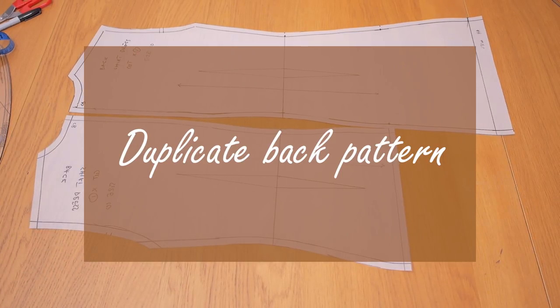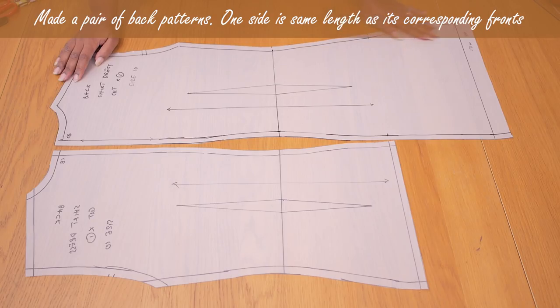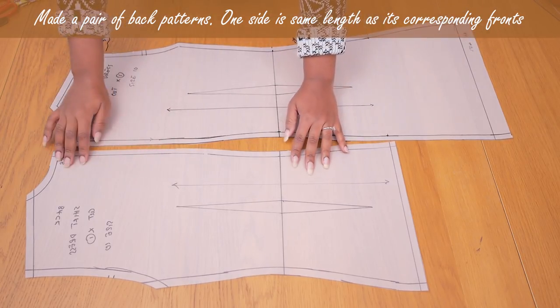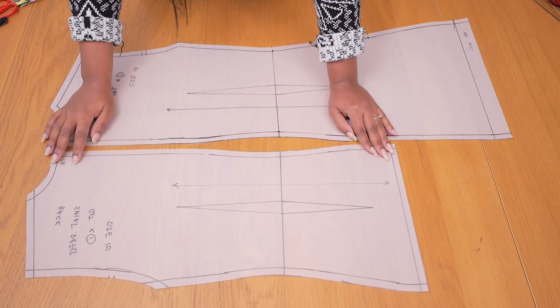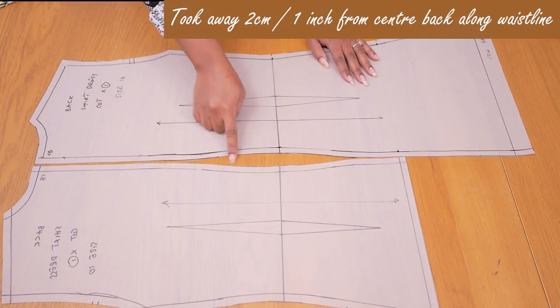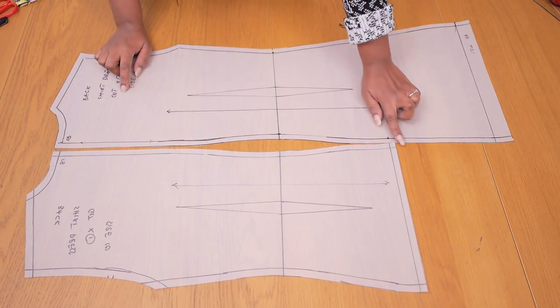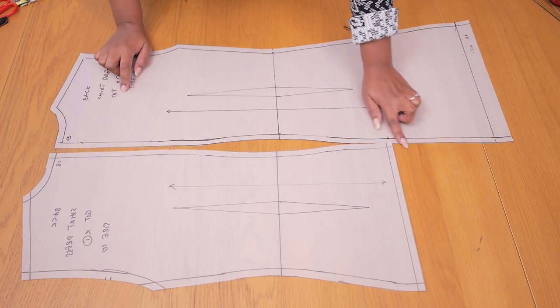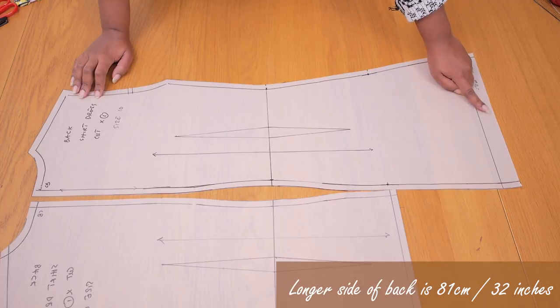Now moving on to my back patterns, I went ahead and created a pair of back patterns like we did for the front. So you would want to cut a back that is as short as your hip length and one that is as long as 81 centimeters or 32 inches. But I took away two centimeters from the waistline so that back of the dress really goes in nice and flat when you have the garment on.